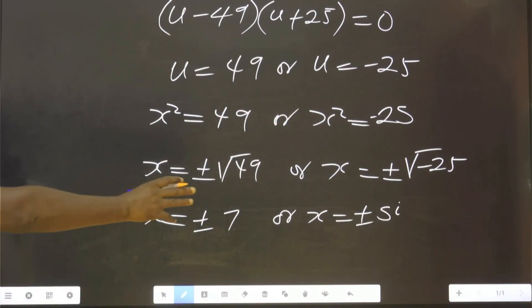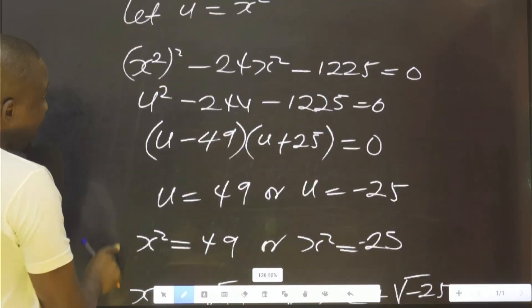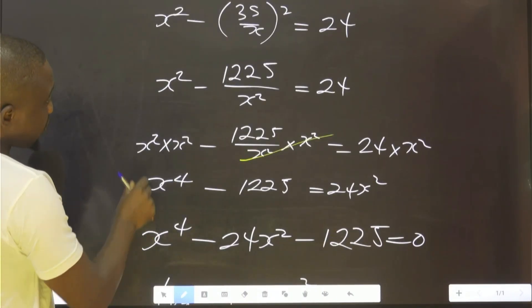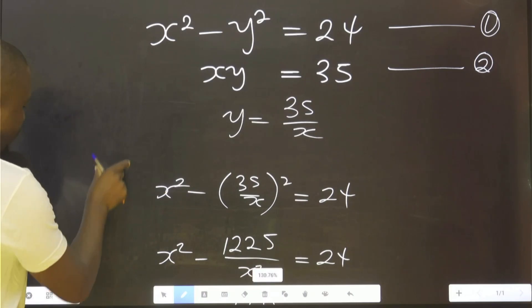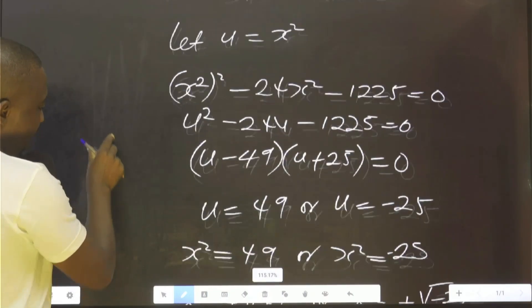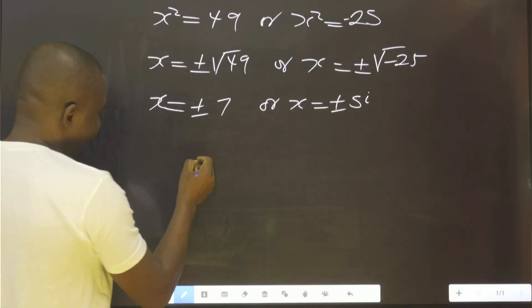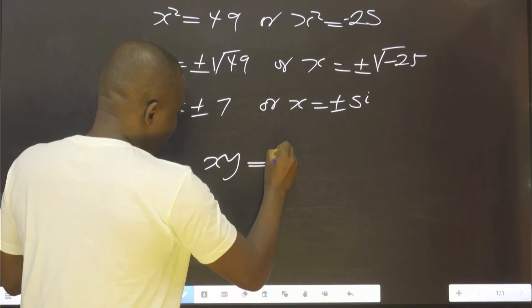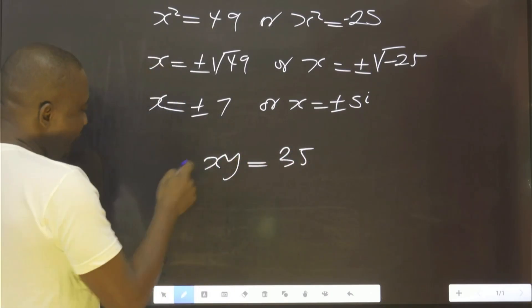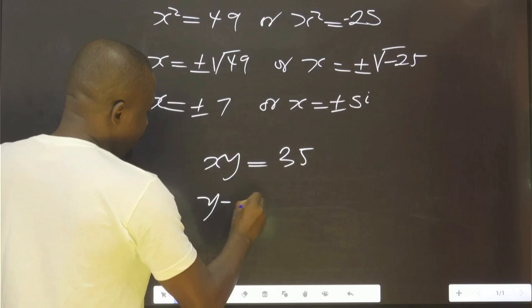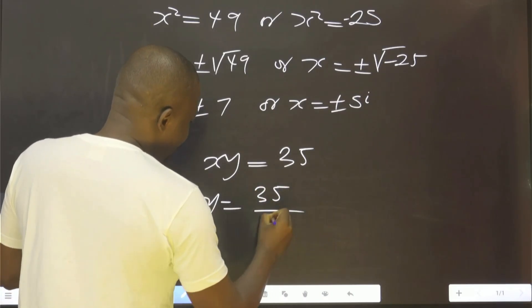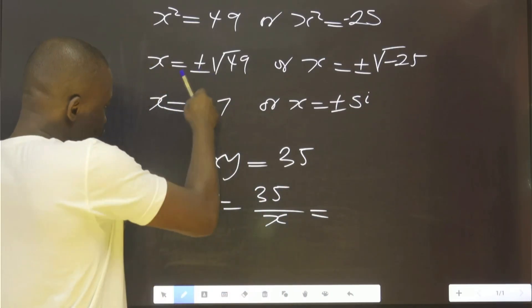So with this information we have now, let's go back and look at what was equation 2. Equation 2 is xy = 35. So to have y now, I say y = 35/x, which is equals to, for the first one...